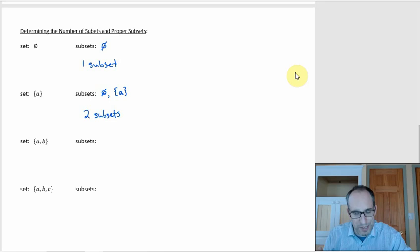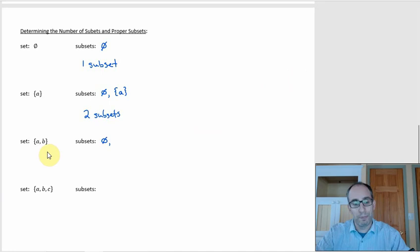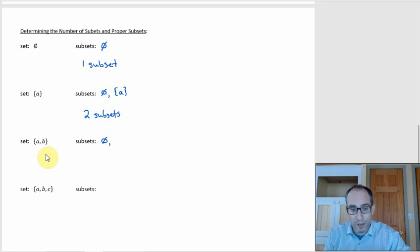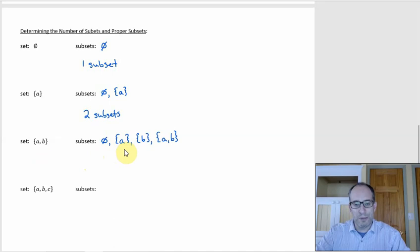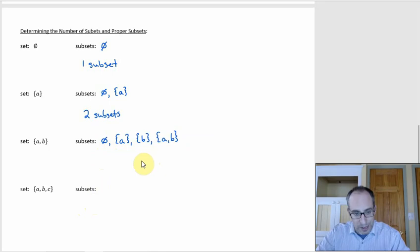For the set {a, b}: the empty set is one. Then you can make subsets with just one element — the set {a} and the set {b}, which are proper subsets. And every set is a subset of itself, so {a, b} is also included. Writing them in order of size: no elements, one element, two elements. That gives us four subsets total.